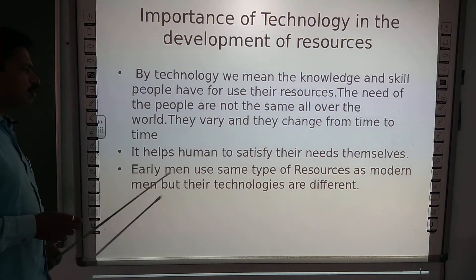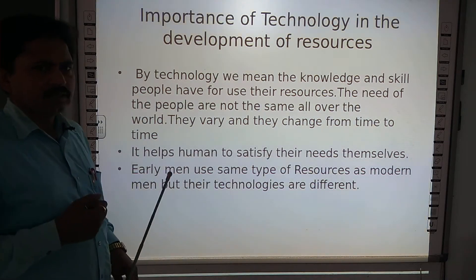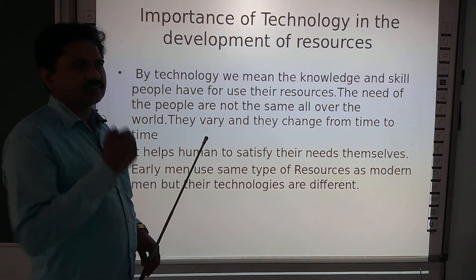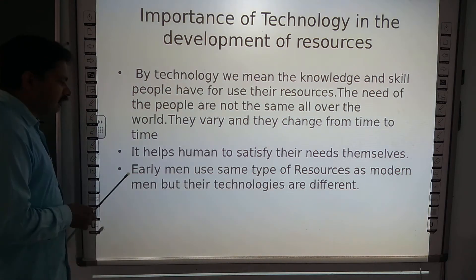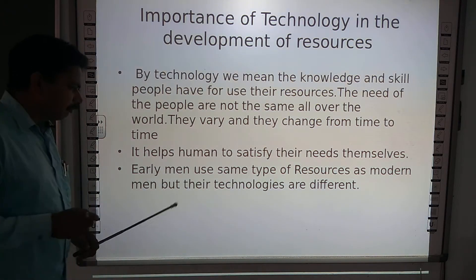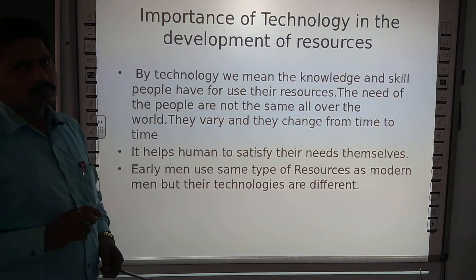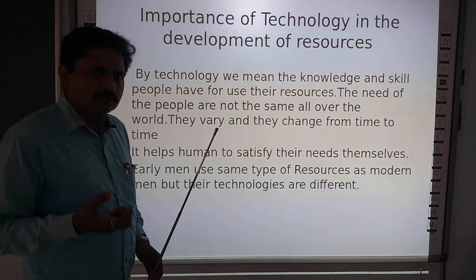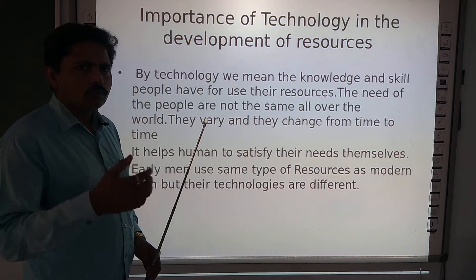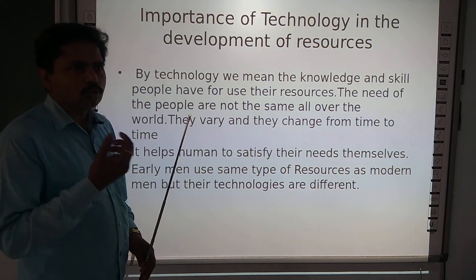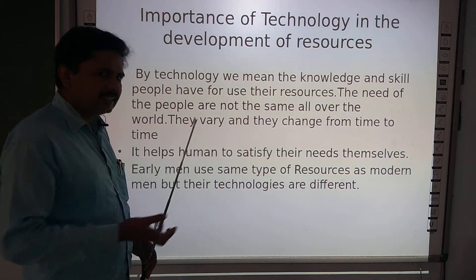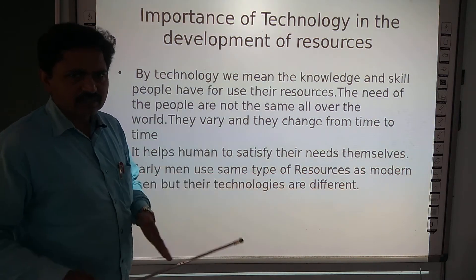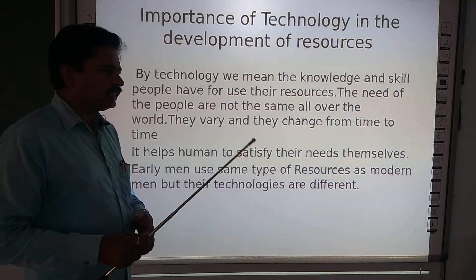Technology helps humans satisfy their needs themselves — technology makes people capable of fulfilling their particular needs on their own, without depending on others. Along with it, early men used the same type of resources as modern men, but their technologies are different. In the Paleolithic time or Stone Age, men used stone to make weapons. But nowadays, weapons cannot be made from stones. Stones are used for making buildings, roads, bridges, and many other things. So the same resource, with the passage of time, gets converted or its usage changes.